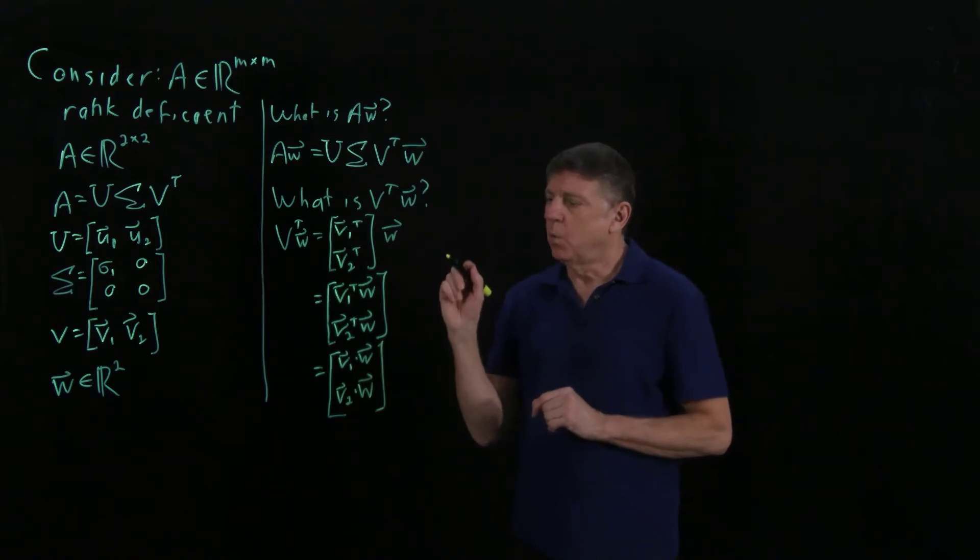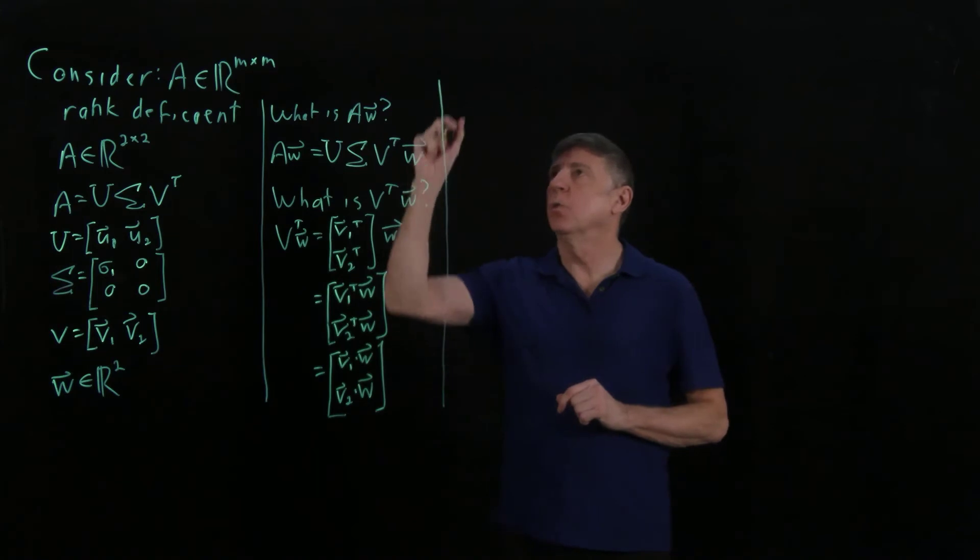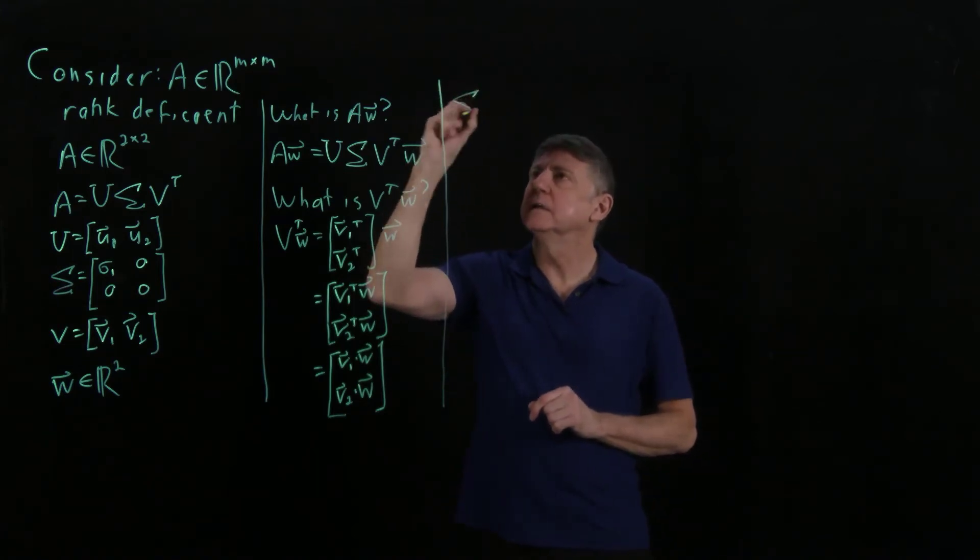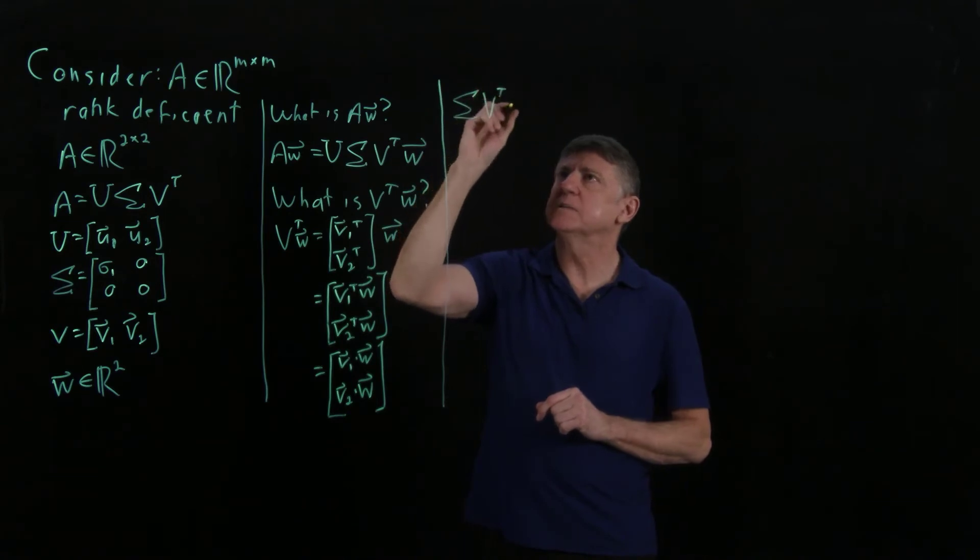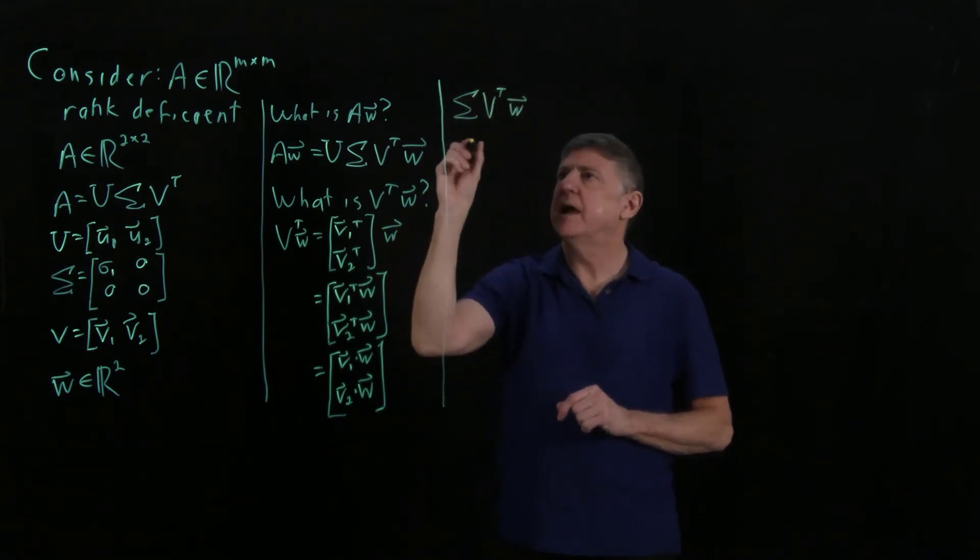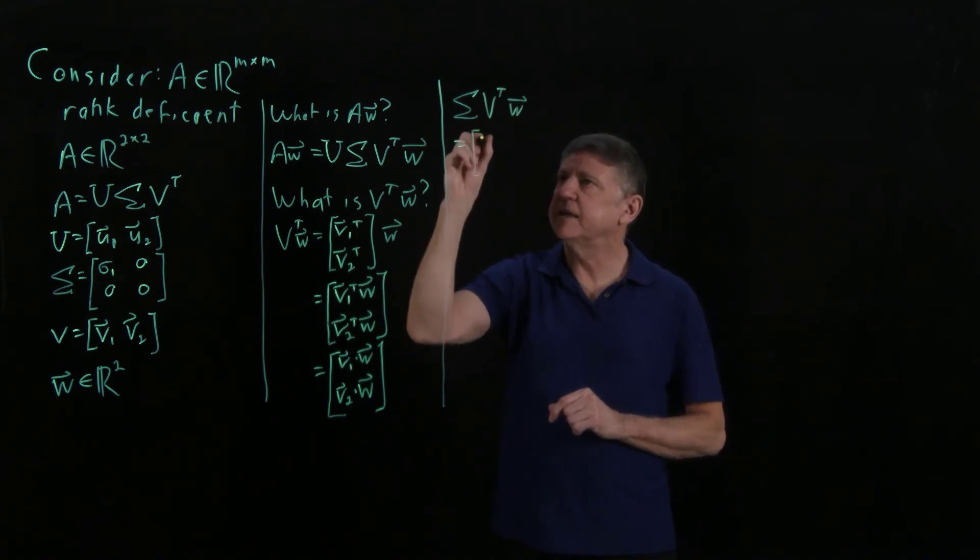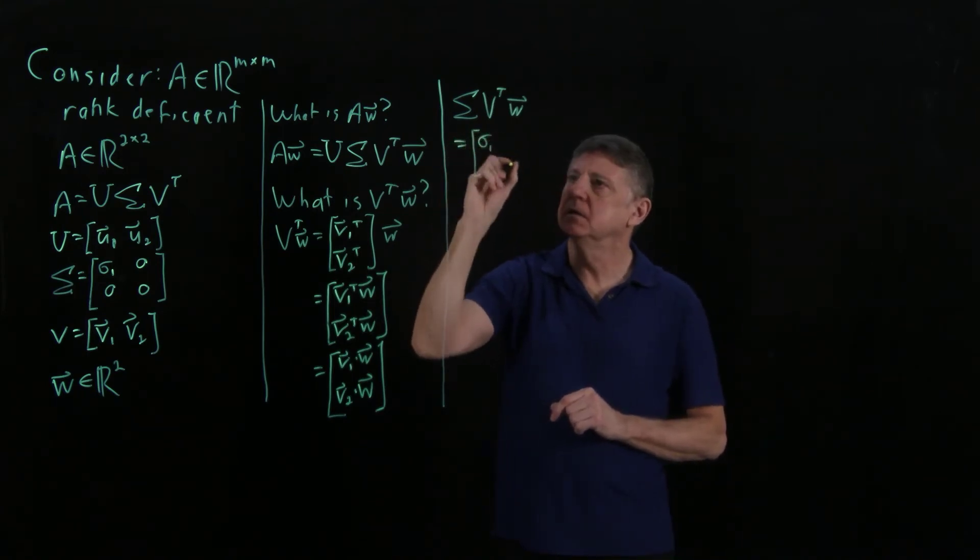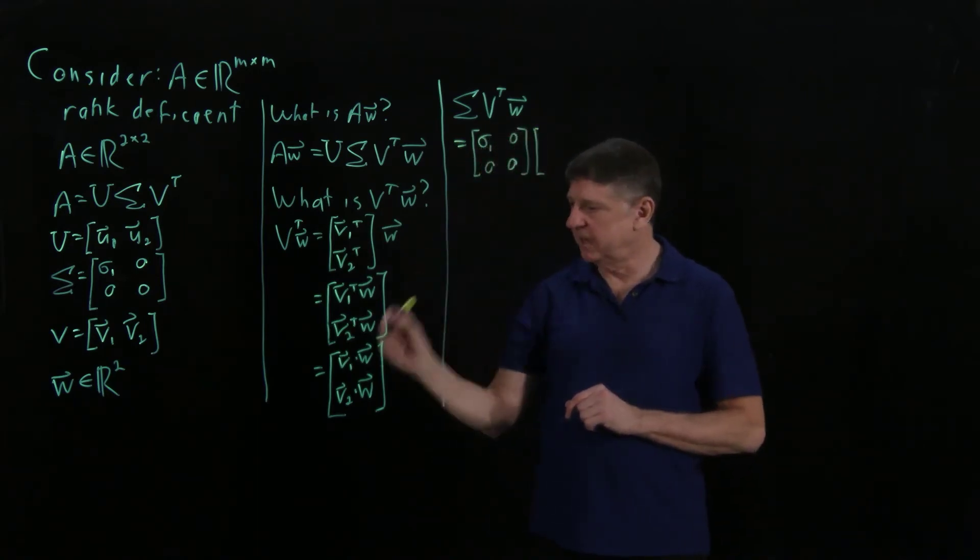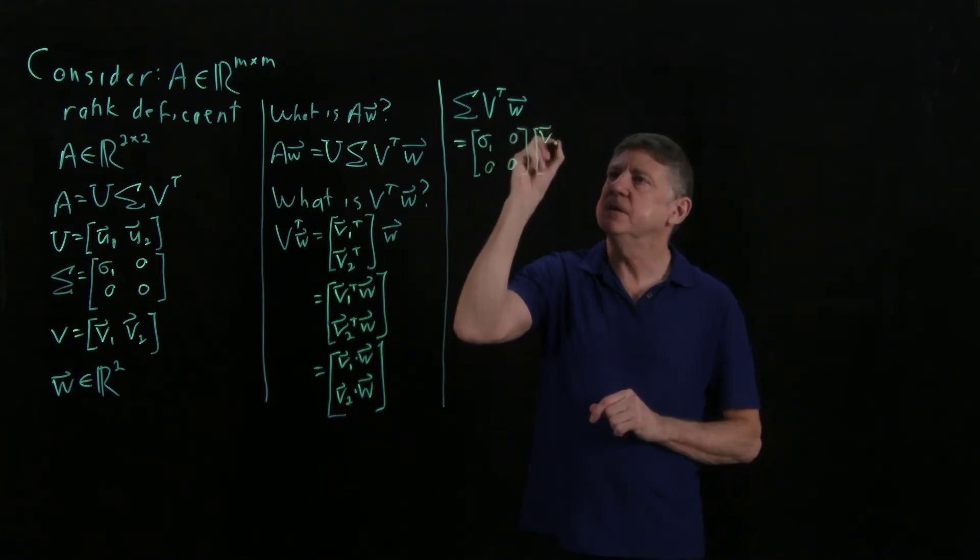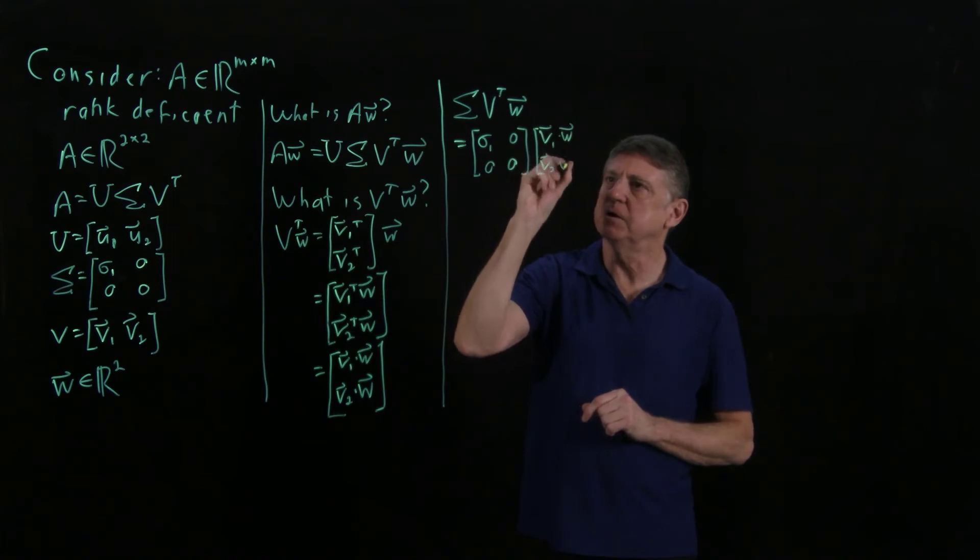So now, what is the next product? So what is, so sigma times V transpose times W has to equal, when we take that, that is sigma 1, 0, and then the off diagonals are 0, and that is now times V1 dot W, V2 dot W.